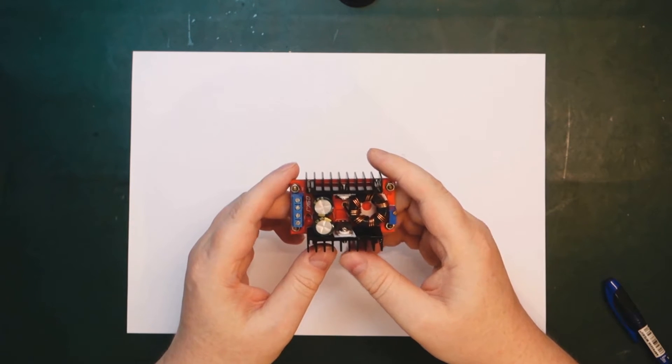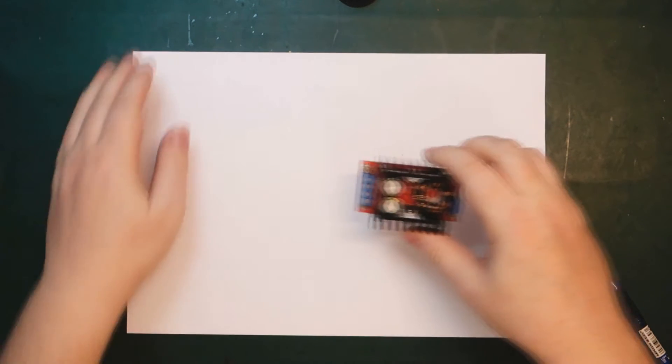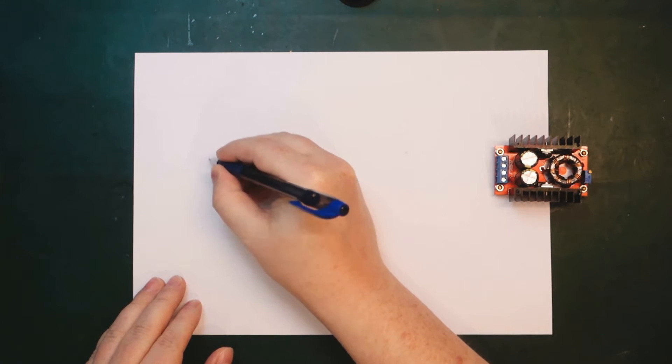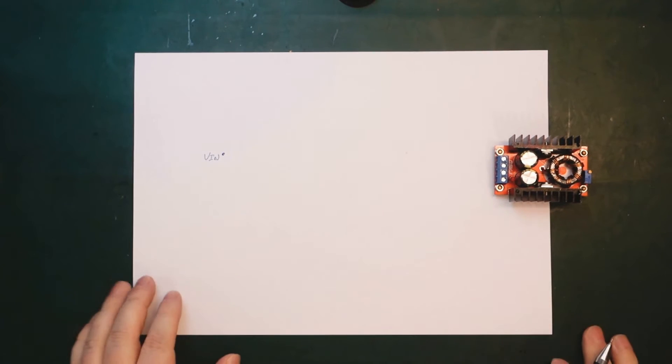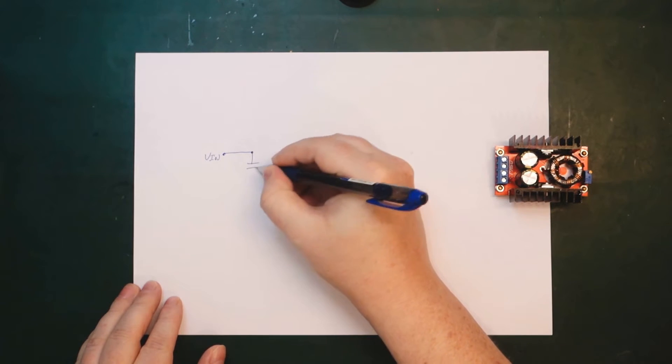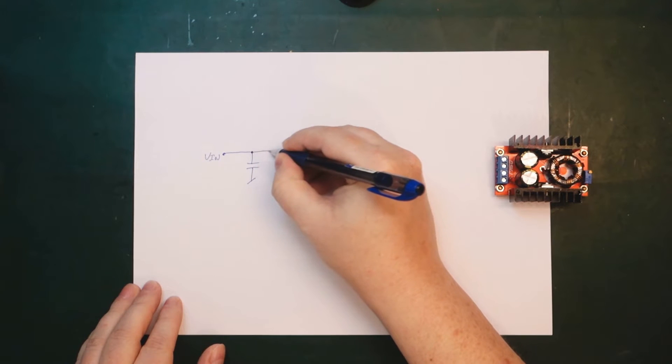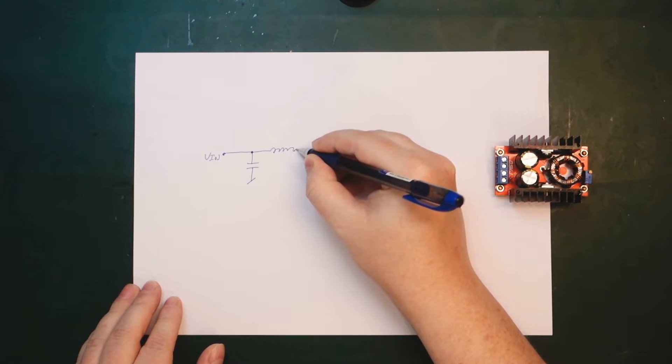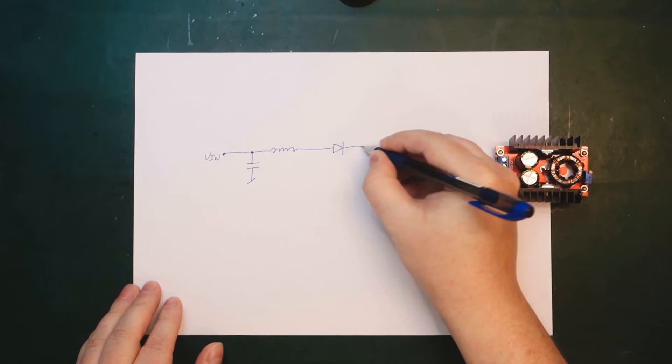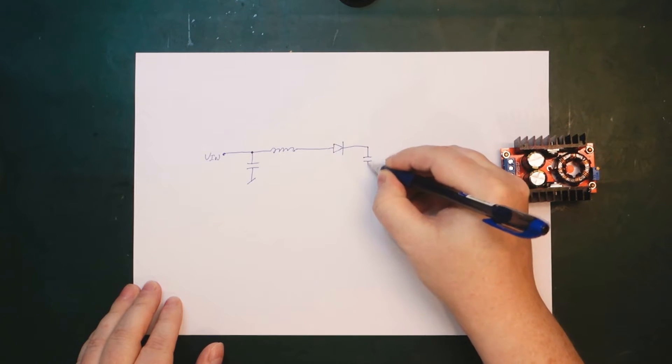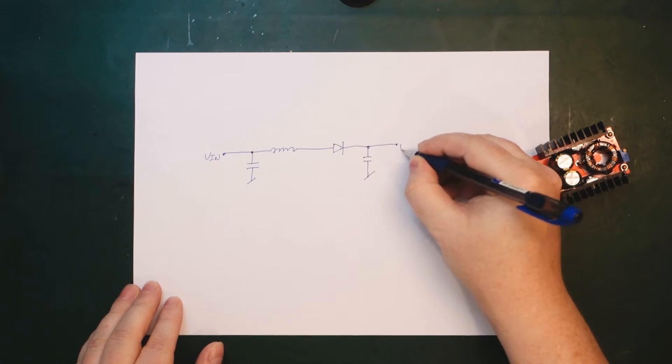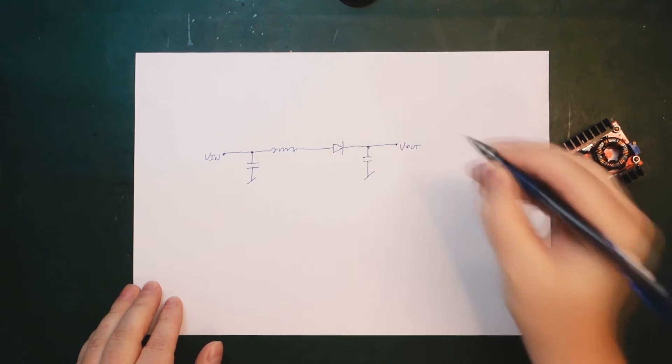The way it works, slightly simplified, is like this. Let's say we have our input voltage here. Then we will have a smoothing filter capacitor here on the input. We will have an inductor, and we will have a diode, we will have another capacitor, and then we will have our output voltage.